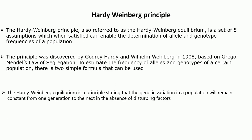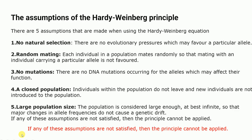The Hardy-Weinberg principle has five assumptions. Point number one is no natural selection — there should not be evolutionary pressures which may favor a particular allele. Point number two is random mating — each individual in a population mates randomly so that mating with an individual carrying a particular allele is not favored. Point number three is no mutations — there are no DNA mutations accounting for the alleles which may affect their function.